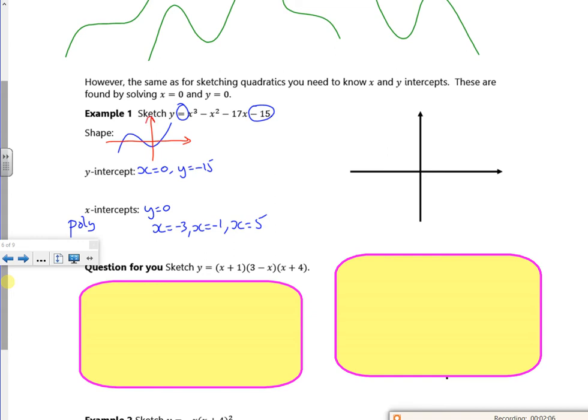I tend to draw the graph first and add axes later. So let's go with -3, -1, -15, and 5. So there's my 5, there's my -15, there's my -1, there's my -3. That's okay.